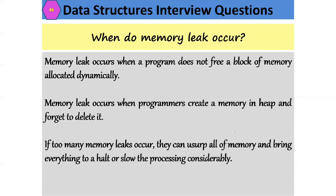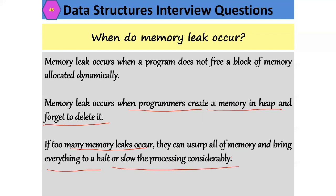When does a memory leak occur? Memory leak occurs when a program does not free a block of memory allocated dynamically — when programmers allocate memory on the heap and forget to delete or free it. If too many memory leaks occur, they can exhaust all memory and bring processing to a halt or considerably slow down the program's efficiency.